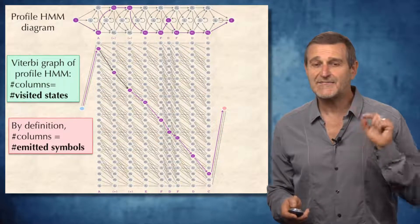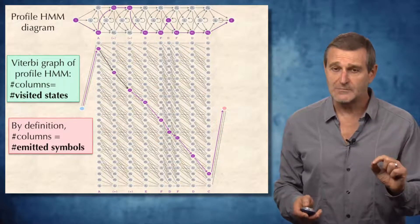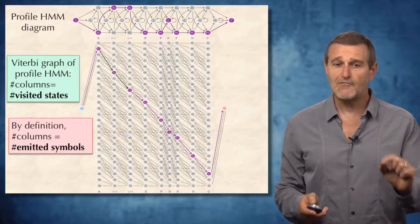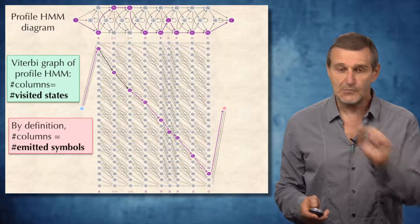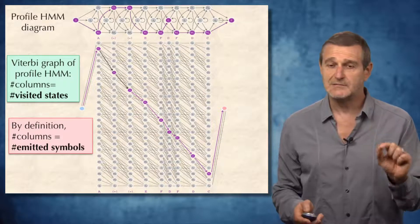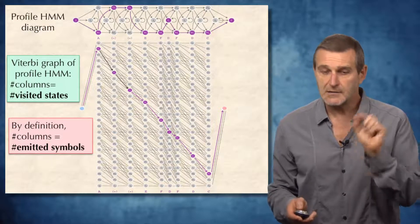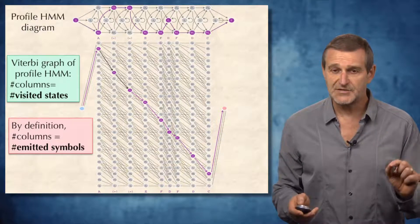And therefore, by definition, the number of columns in the Viterbi graph should be equal to the number of emitted symbols, which means it should be smaller than the number of columns in this erroneously constructed Viterbi graph.